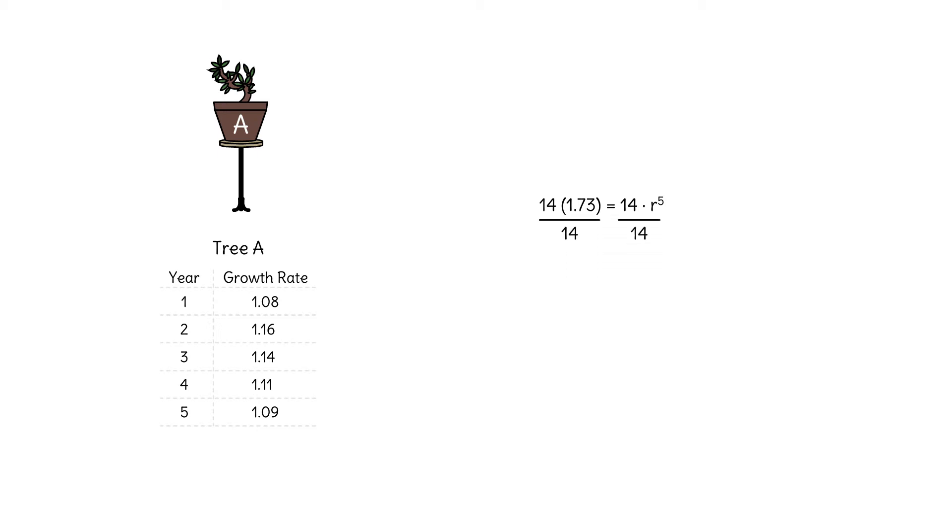Dividing by 14 shows us that the initial height of the tree is irrelevant here. Now we just take the fifth root of 1.73 and r is approximately 1.12. This means that the variable five-year growth rate of our first tree is approximately equivalent to a steady growth rate of 12%.